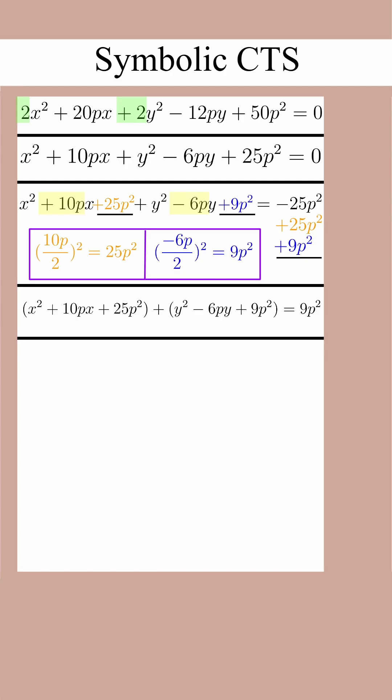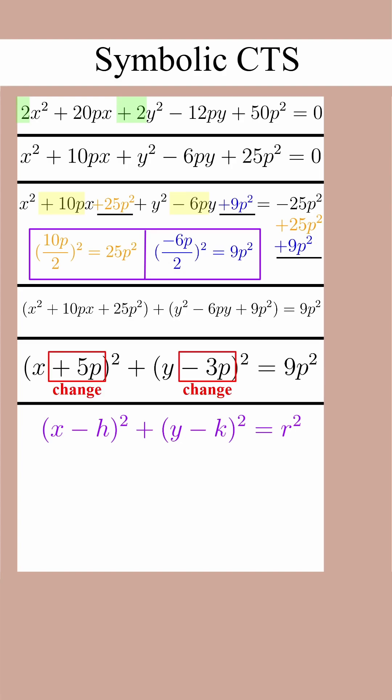Now we can factor both trinomials, and if we did it right, they should form perfect squares. Now we can hold up this equation to the equation of a circle. We see that the center is negative 5p comma 3p and that r² is equal to 9p².